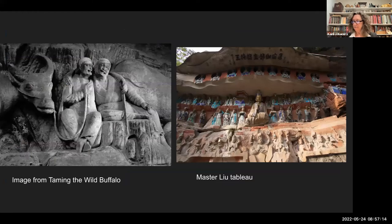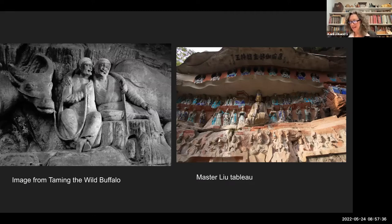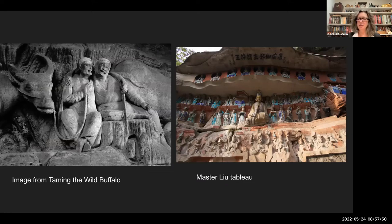The Thousand-Armed Guanyin facing the Peacock Queen also made sense — these are two protector deities, with the Peacock Queen being particularly important in Sichuan, so having them facing off across the Parinirvana end of Great Buddha Bend makes sense. The Ox Herding Tableau and its approach to enlightenment facing the Master Liao Tableau and his approach to enlightenment also made sense. The scattered imagery of Vairochana is harder to explain, but it's well within the overarching context of Baudingshan as a site inclusive of a wide range of Buddhist schools and practices.